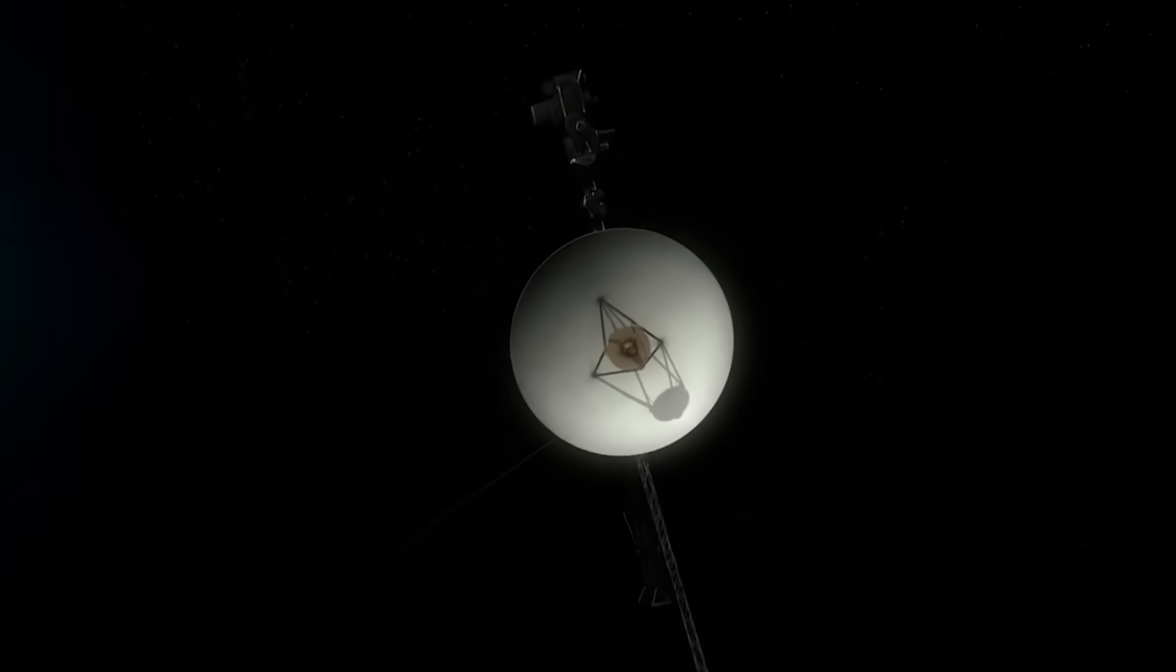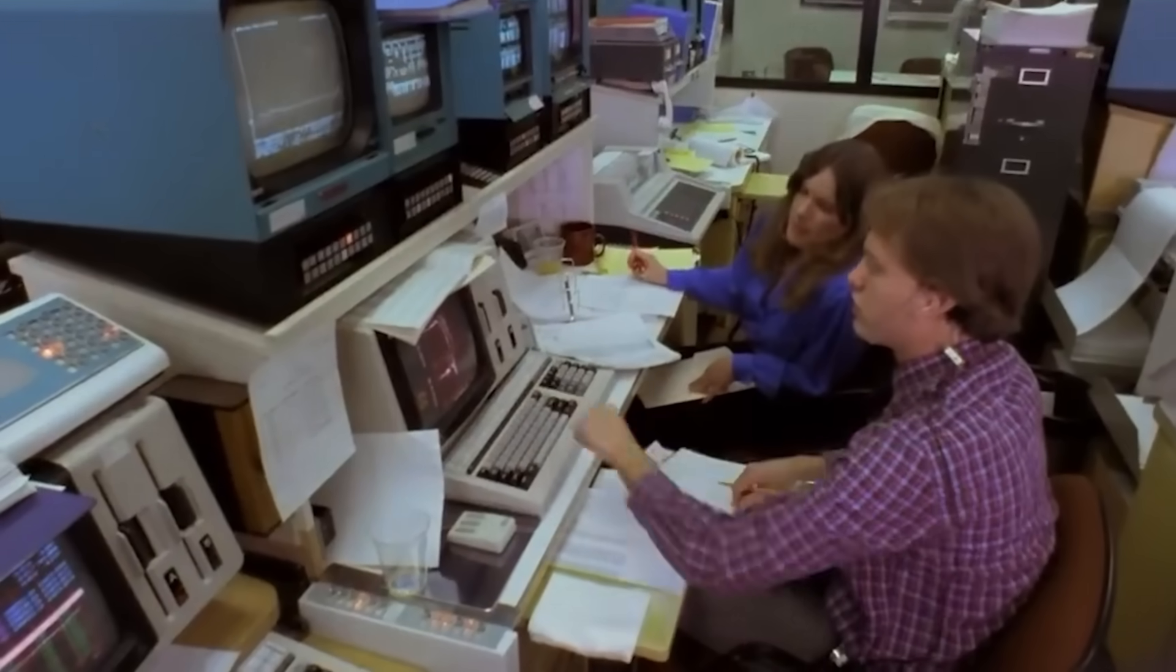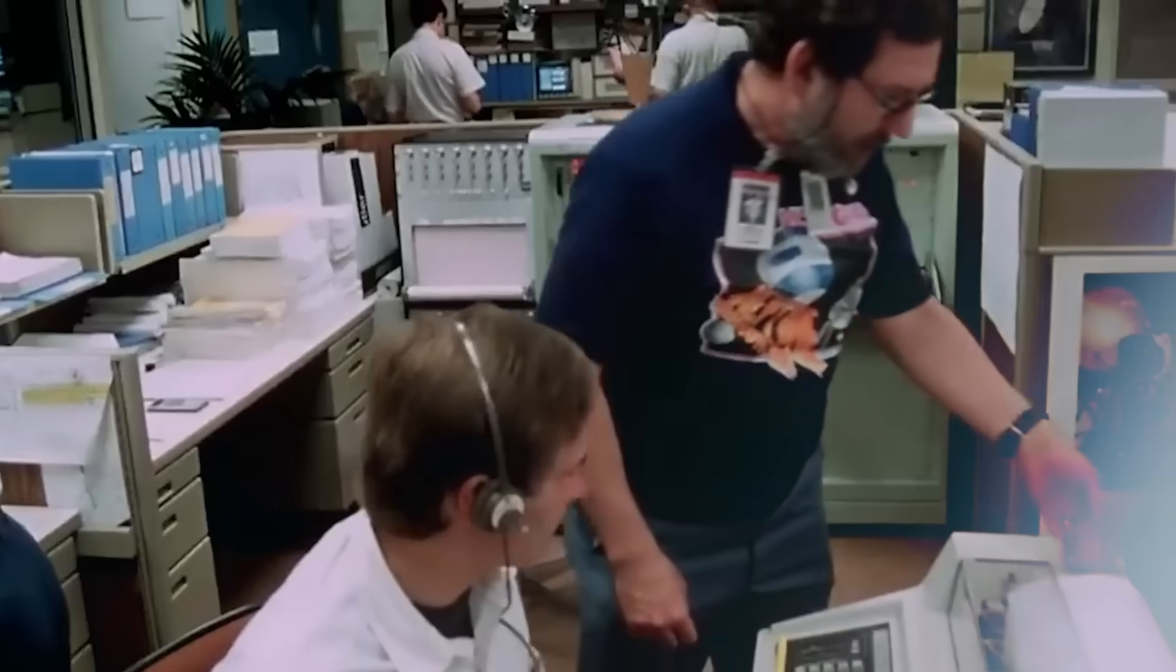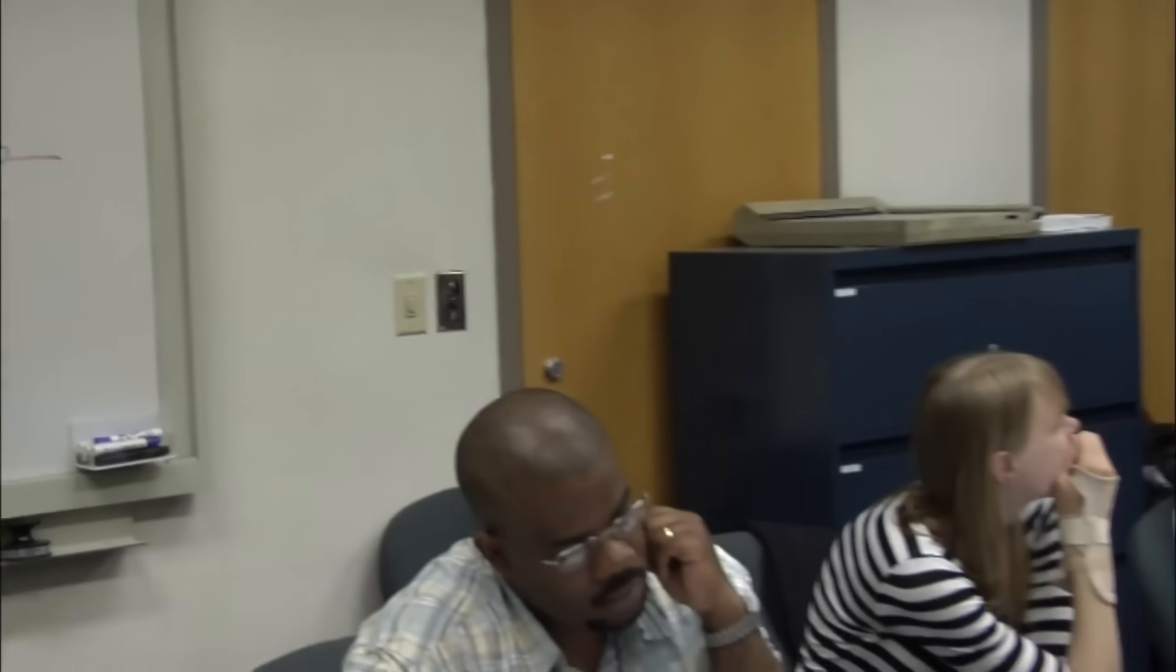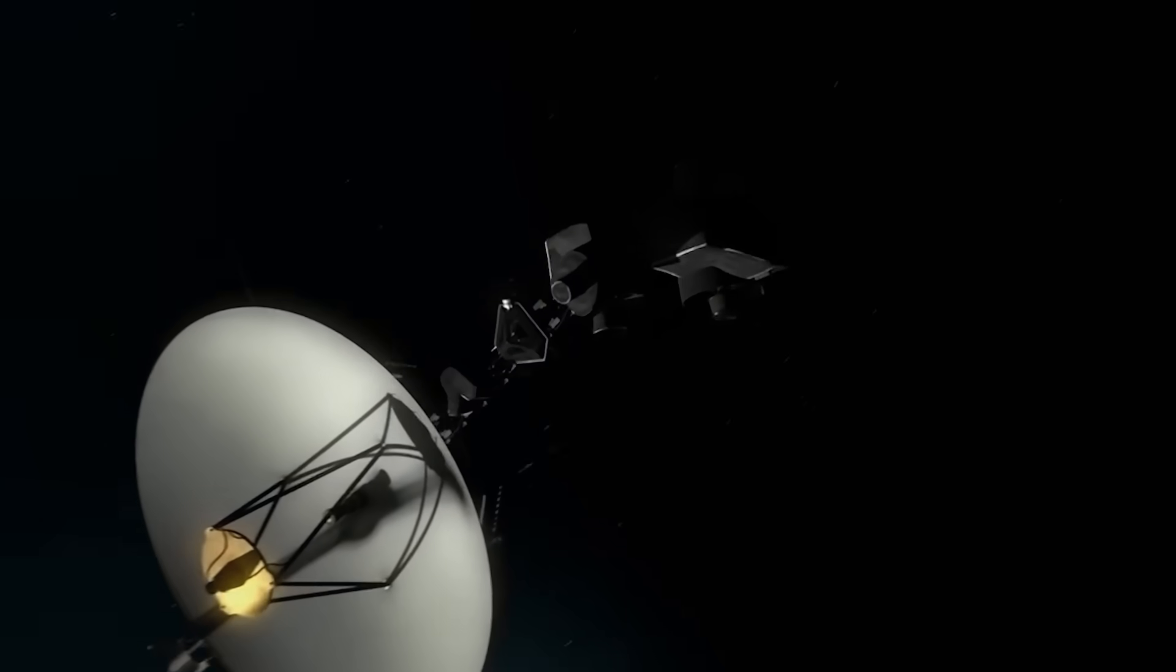Attached to Voyager 1 is the Golden Record, a phonograph carrying sounds and images from Earth, encoded with greetings, music, and instructions for how to play it. A gift to the cosmos, a message in a bottle. But what if that message has already been found?